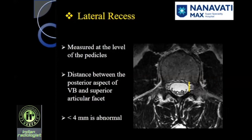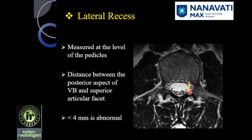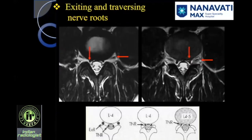A little bit about lateral recess stenosis. When we talk about lateral recess stenosis, this is the distance measured between the posterior aspect of the vertebral body — L4 here — and the superior articular facet of L5. This distance is measured just outside the margin of the thecal sac, at the level of the undersurface of the pedicle. Anything less than 4 mm at this juncture is abnormal. When you have a diameter of 2 or 3 mm, it will be called lateral recess stenosis. 4 mm or more is normal.